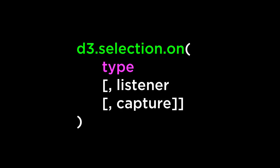d3 Selection dot on: the d3 Selection dot on method adds an event listener to each element in the current selection. The type is a string of the event type we want an event listener for. Examples could be mouse down, mouse up, mouse over, mouse out, etc. For our purposes, we will use the mouse over and mouse out as the two types.